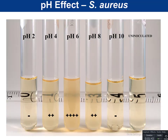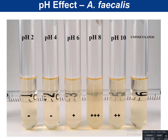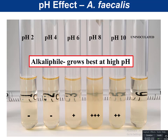Staphylococcus aureus grew at pH 6, pH 8, and somewhat at pH 4, so we'd call it a neutrophile — grows best around neutral pH. Alkaligenes faecalis grew best at pH 8 and 10, a little at pH 6, so it's an alkalophile — grows best at high pH. Use your organisms-to-know list to identify which organisms you need to study for pH and osmotic pressure.